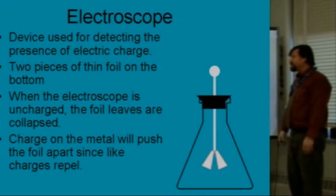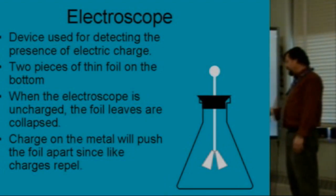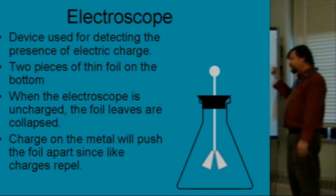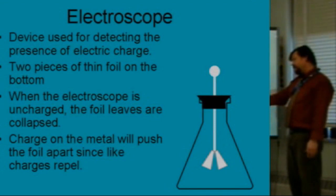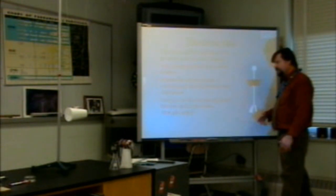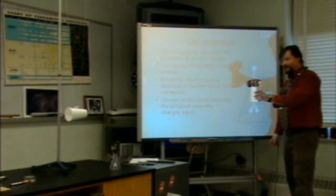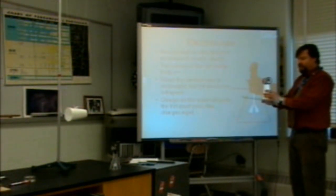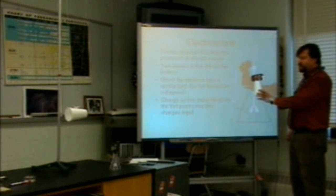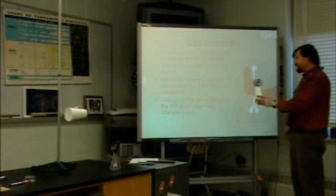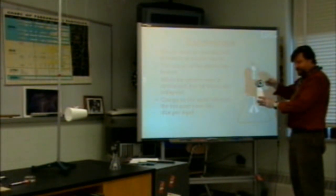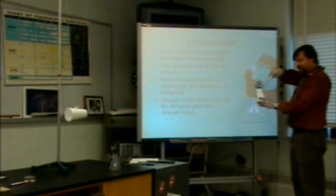An electroscope is a device used for detecting the presence of electric charge. It has two pieces of thin foil at the bottom. When uncharged, the foil leaves are collapsed or close together. When a charge is brought to the metal, like charges repel and push the foils apart. Here is a simple homemade electroscope — a soda can on a styrofoam cup. The styrofoam cup is an insulator so it doesn't allow grounding, and we have two little pieces of foil which are hanging collapsed. If I place a charged object by it, the foil should spread apart.